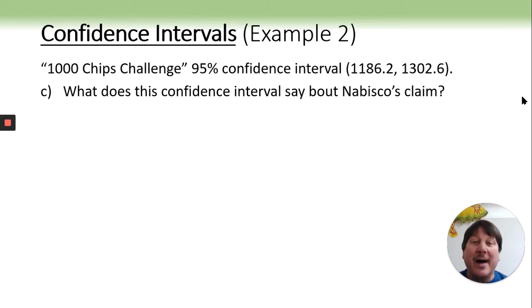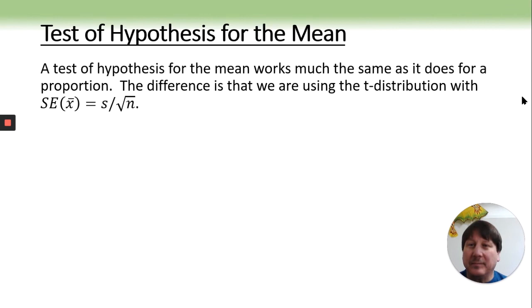Doing tests of hypothesis for the mean. Very similar, except we're in the T distribution, and we are going to be using the standard error. So the test statistic is very similar to a Z. You take your X bar, you subtract the null hypothesis, and divide by the standard error. Of course, our standard error is a little bit different.